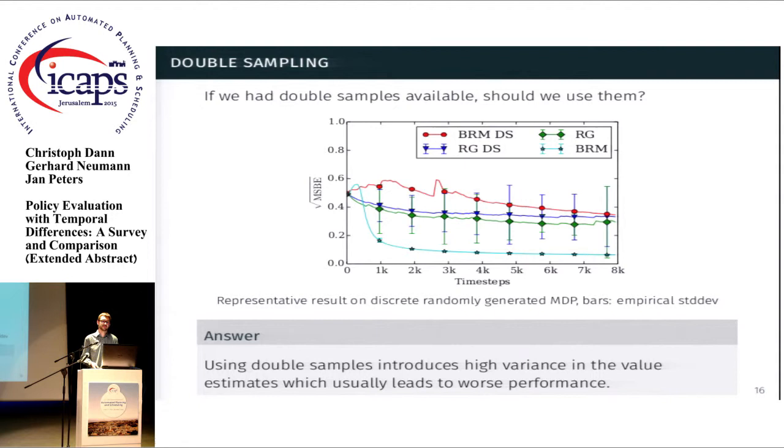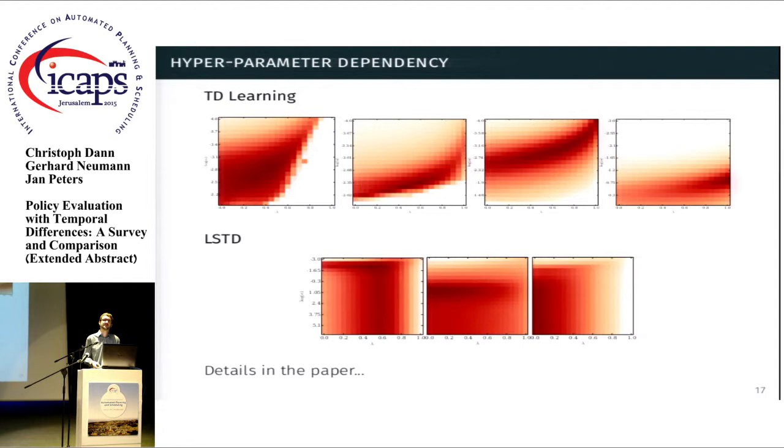So we also did extensive parameter studies where we looked at how the performance of the algorithms depends on the parameter settings that we use for each task. And by comparing them among different benchmarks, we can then assess empirically how difficult it is to pick a parameter value that works across domains. And it generally shows that least-square STD learning and least-square policy evaluation is quite easy to pick parameters for.